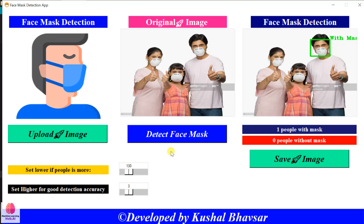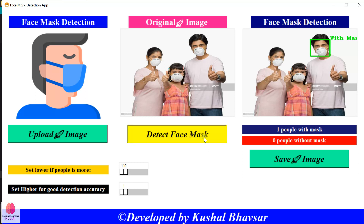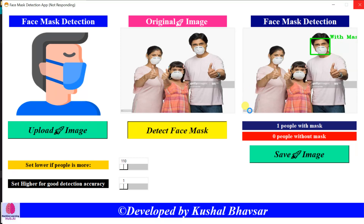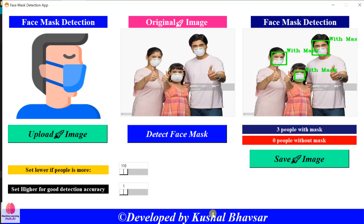With the default configuration it will detect around one person, as you can see at the bottom. But if I change the configuration then it will change my result — now it will detect all the people. You can see now 3 people are detected.